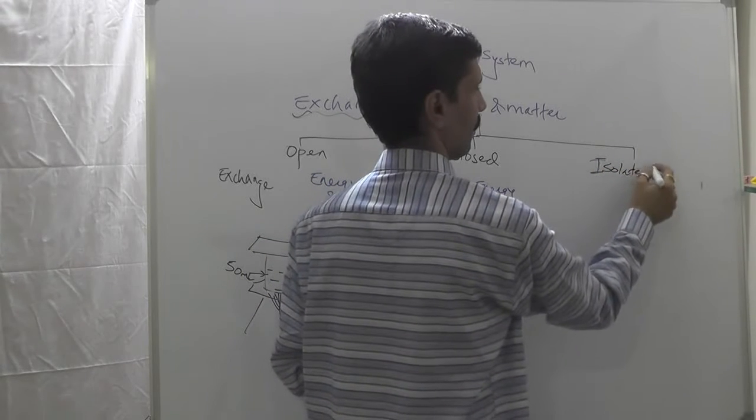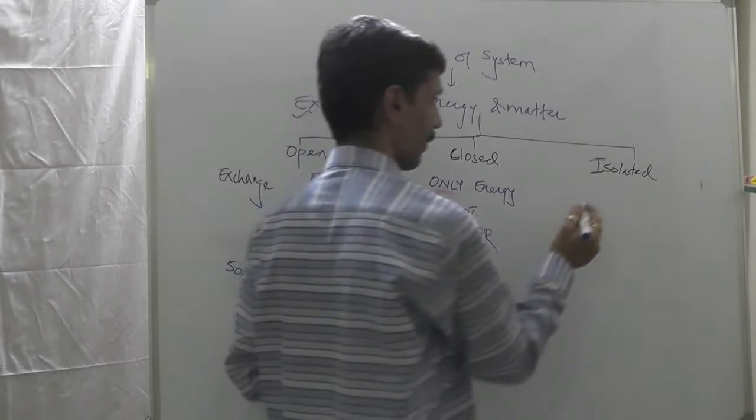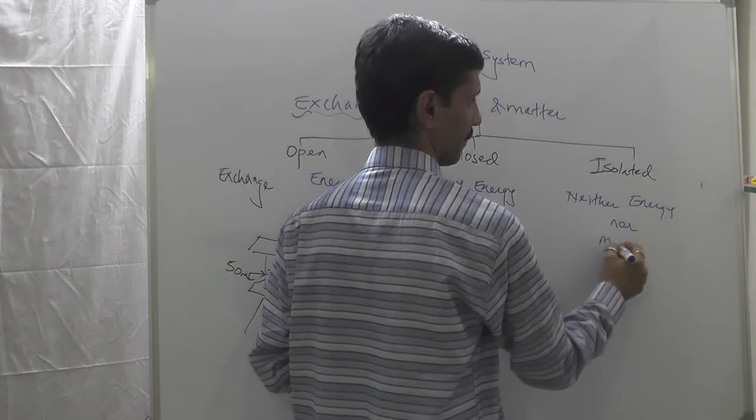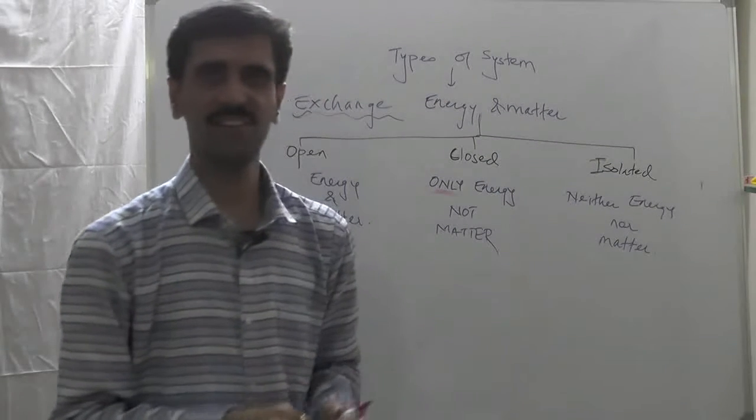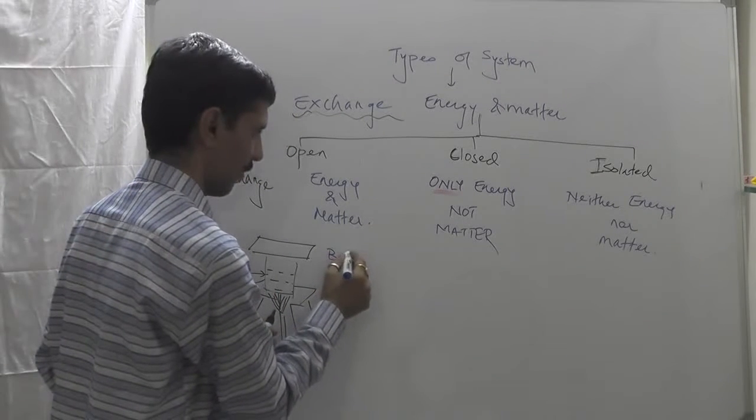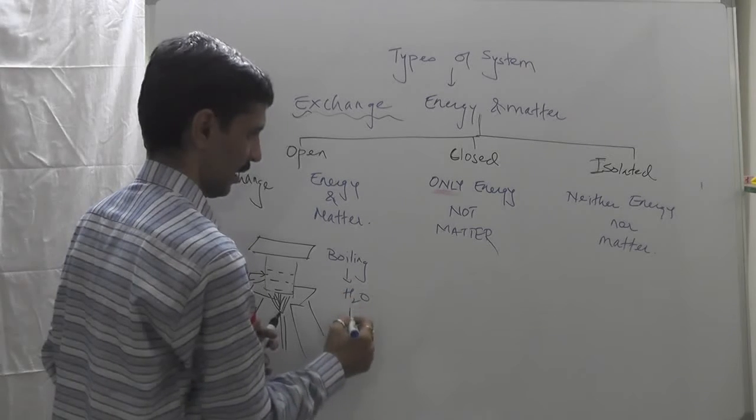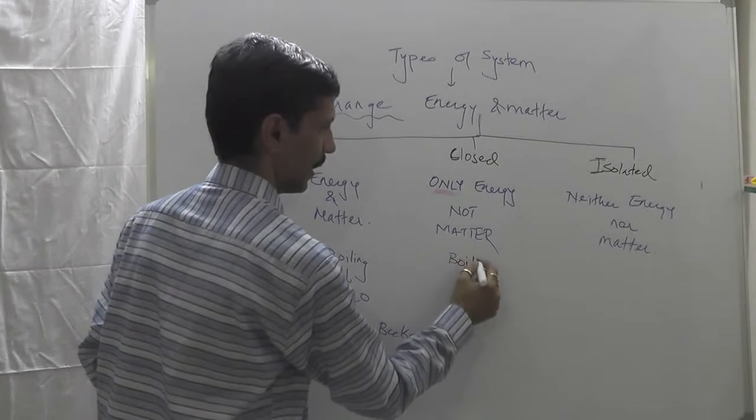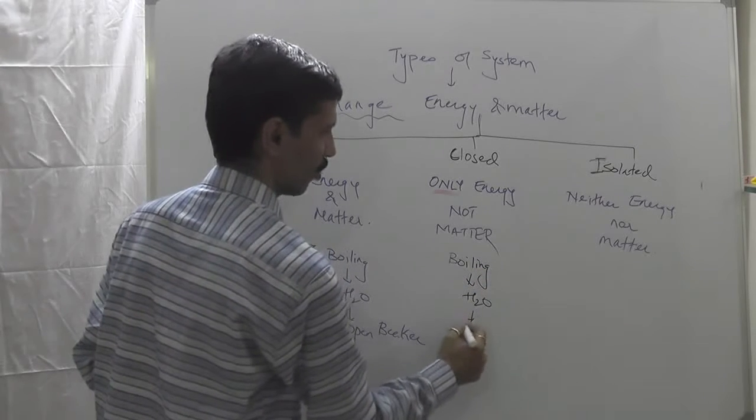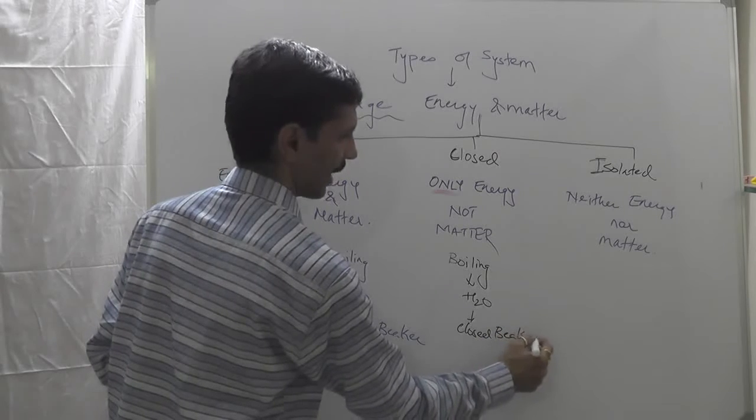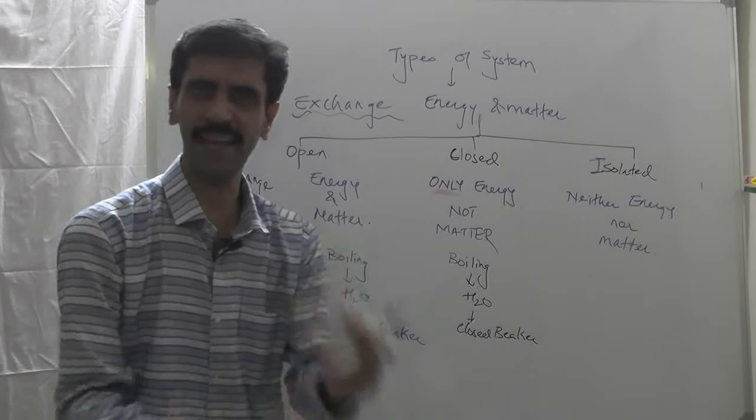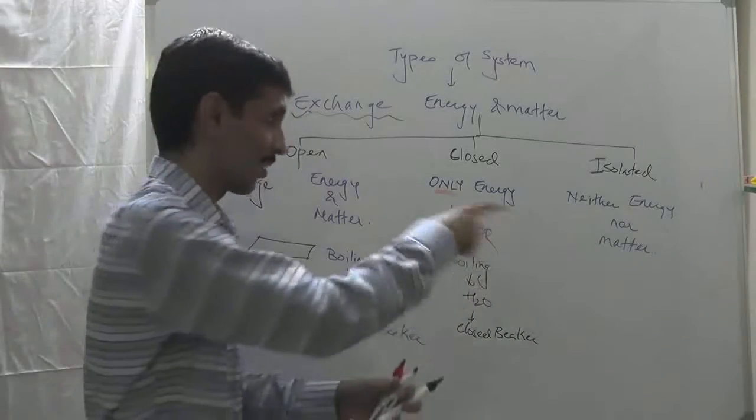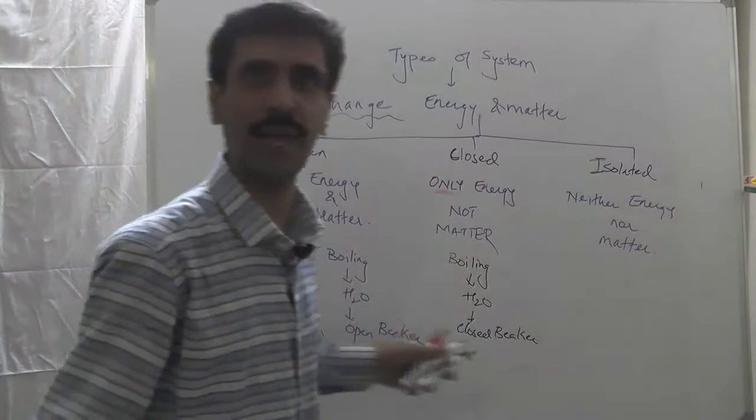Such system is called as isolated system. What do we call it as? Isolated system. No exchange of matter. What do we call it as? Neither energy nor matter. This is what it is. So the example over here is hot tea in a thermos flask.